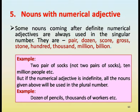Nouns with a numerical adjective. Some nouns coming after a definite numerical adjective are always used in the singular number: pair, dozen, score, gross, stone, hundred, thousand, million, billion. Example: two pair of socks (not two pairs of socks); ten million people, etc.